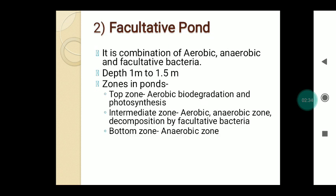The second classification is the facultative pond, which is a combination of aerobic and anaerobic processes in which facultative bacteria are present. It has a depth of about 1 to 1.5 meters and has particular zones. The top zone has aerobic biodegradation with photosynthesis. The middle intermediate zone has both aerobic and anaerobic decomposition done by facultative bacteria. At the bottom zone, decomposition is done in the absence of oxygen — the anaerobic zone.